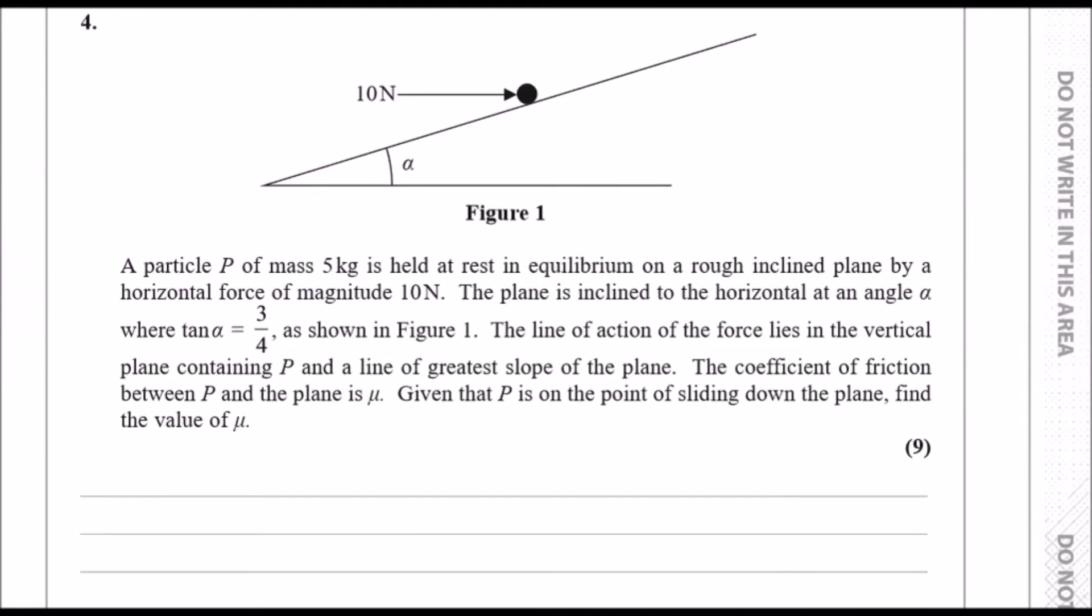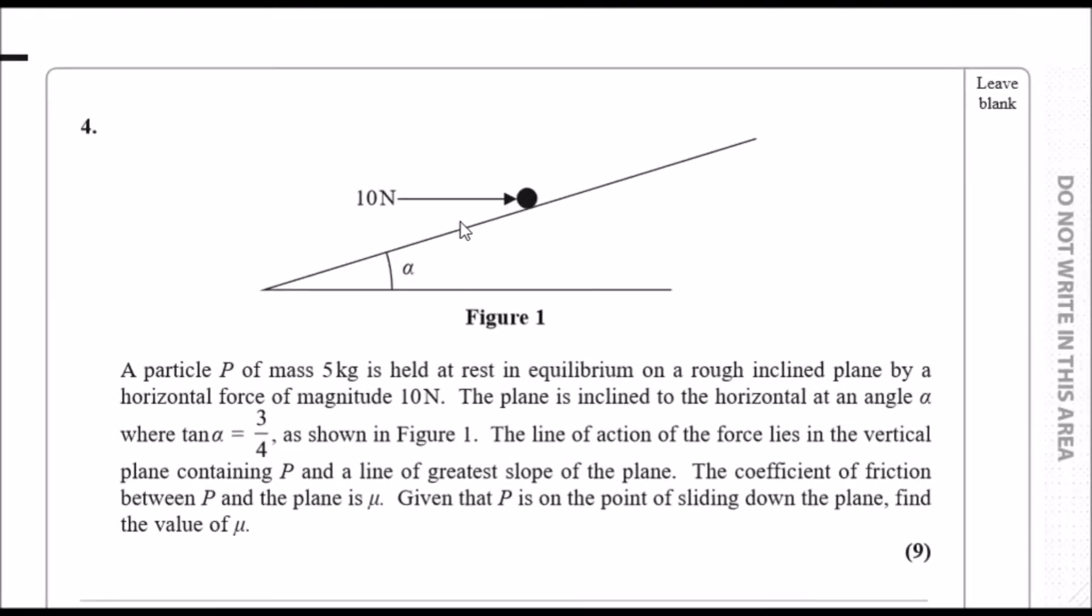Okay guys, here we go, question 4. It says that a particle P of mass 5 kg is held at rest in equilibrium on a rough inclined plane by a horizontal force of 10 newtons.